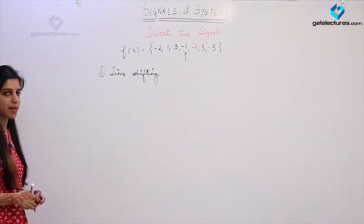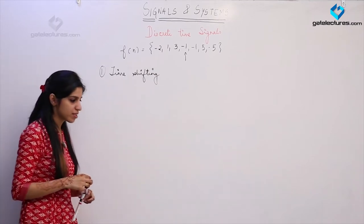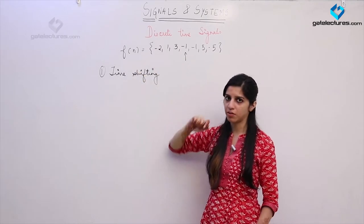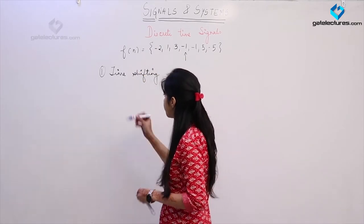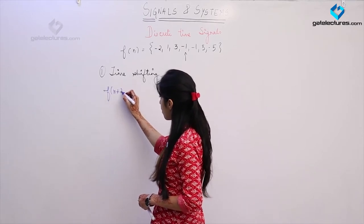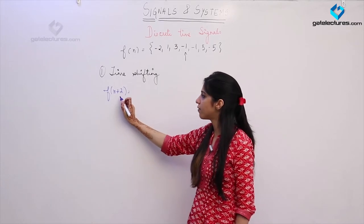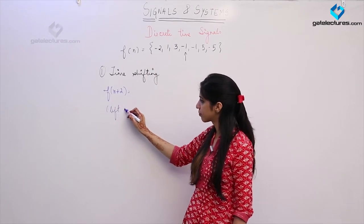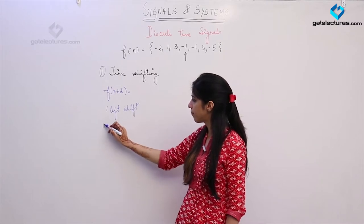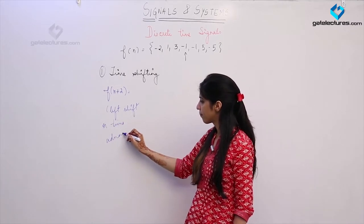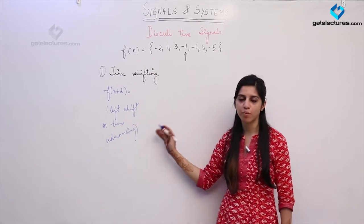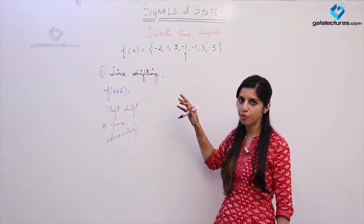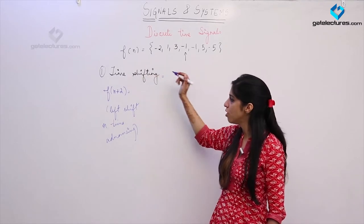The first operation we are going to look at is time shifting. In time shifting, we are adding or subtracting some constant to n — this is what we have done in continuous time signals also. Suppose I am willing to find F(n+2). When we are adding, the signal is going to shift left — this is called a left shift or time advancing. Graphically, we are just going to shift all the values to the left by 2.